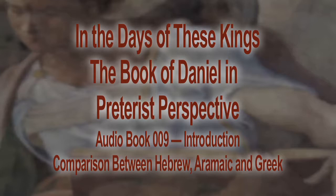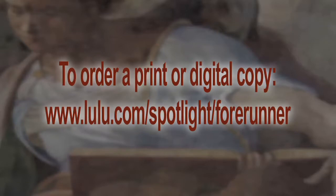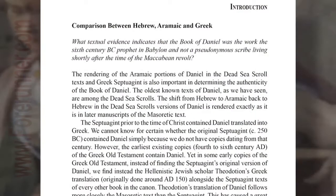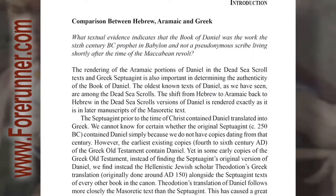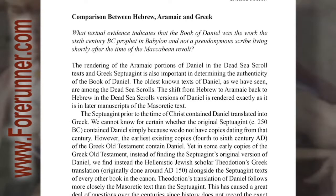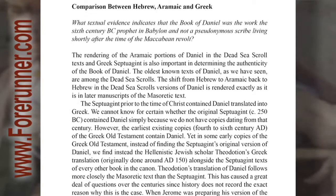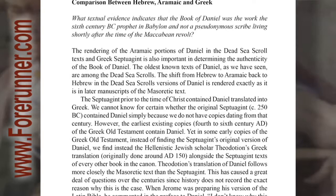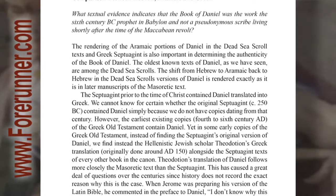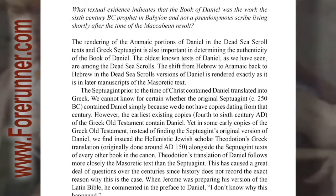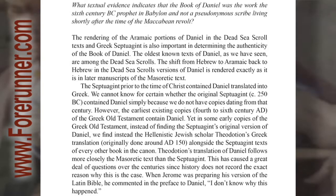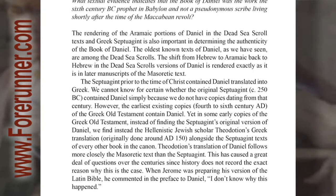Comparison between Hebrew, Aramaic, and Greek. What textual evidence indicates that the book of Daniel was the work of a 6th century BC prophet in Babylon and not a pseudonymous scribe living shortly after the time of the Maccabean revolt? The rendering of the Aramaic portions of Daniel in the Dead Sea Scroll texts and the Greek Septuagint is also important in determining the authenticity of the book of Daniel.